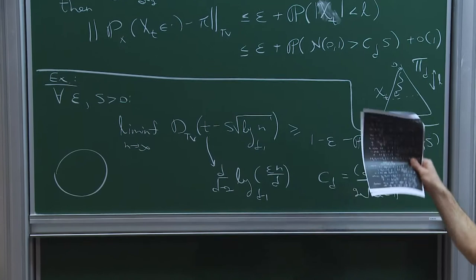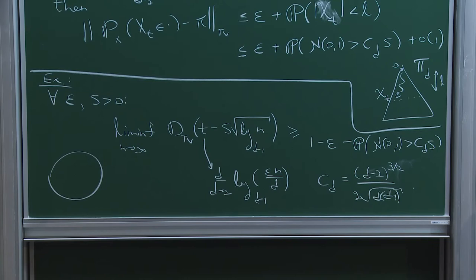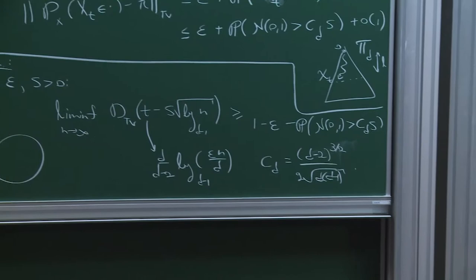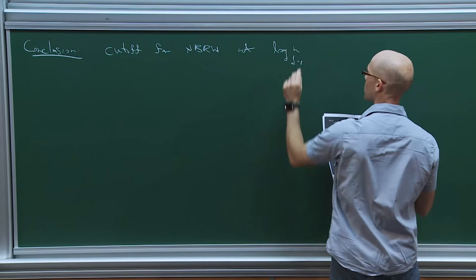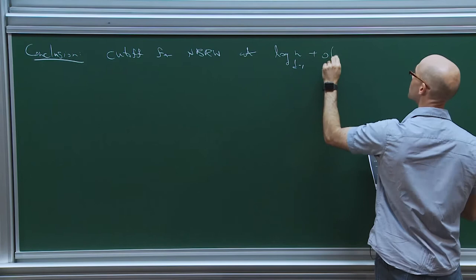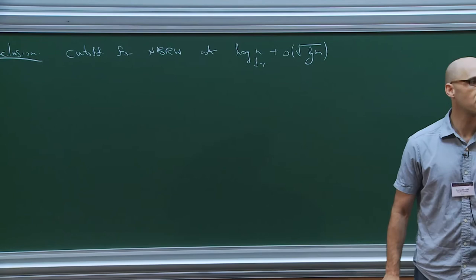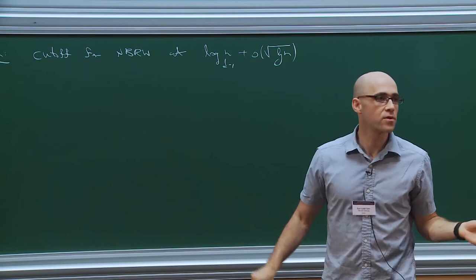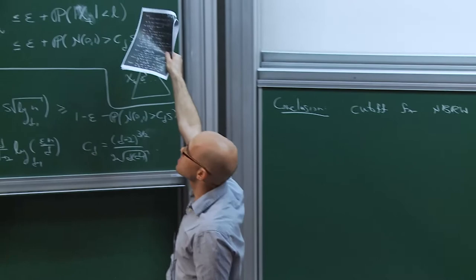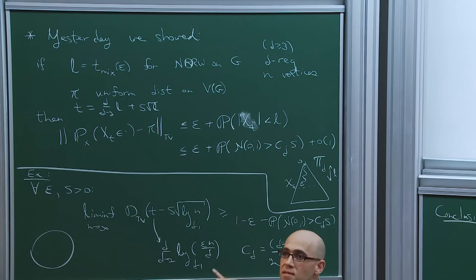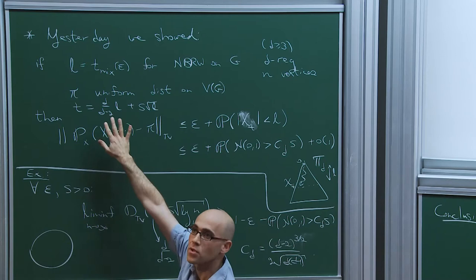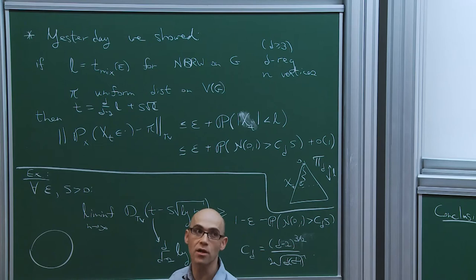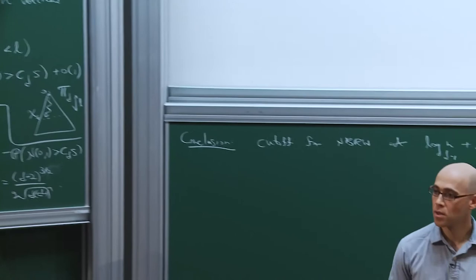The conclusion is: if we have cutoff for the non-backtracking random walk at log_{d-1}(n), plus something of lower order than square root log, then we multiply by d over d minus 2 and add something that overtakes the smaller order term. This s times square root l — the normal fluctuations as you're walking up and down the tree — is really there, and we have a matching lower bound for it. The result will be an understanding of the exact distance from stationarity, which is the theorem we stated last time.